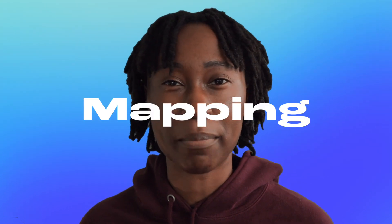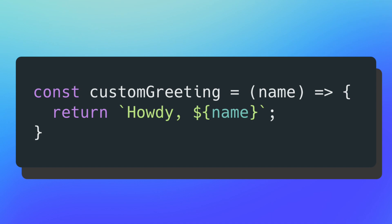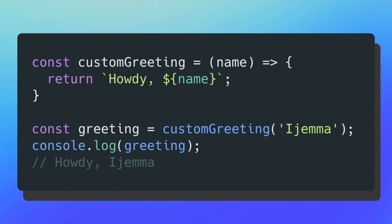Pure functions have one-to-one mapping between their inputs and outputs — for every unique input, there's a corresponding output. Looking at the code block, I have my method custom greeting, which takes in a name argument and returns the greeting 'howdy name'. I create a constant called greeting, call custom greeting with my own name, and print it out — I get 'howdy Ejema'. No matter how this method is called, you can always expect the same output for the same input.